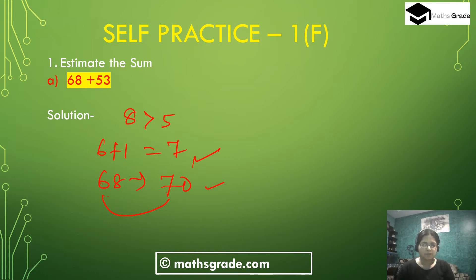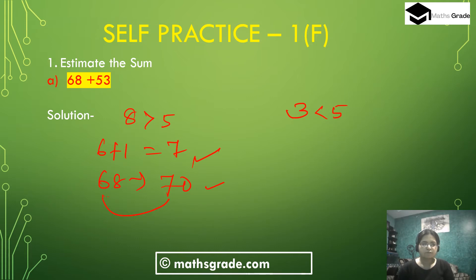Now for 53, when we round the number 53, first look at the unit place digit. The unit place digit is 3, which is less than 5. So we don't add 1 to the tens place digit — 5 stays as it is, and 3 changes to 0. So 53 rounded off to the nearest 10 is 50.